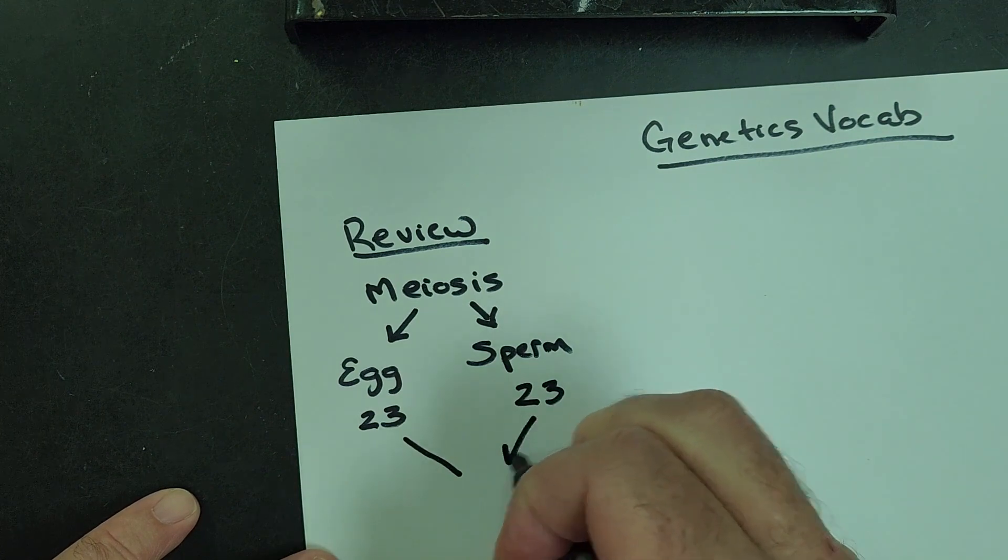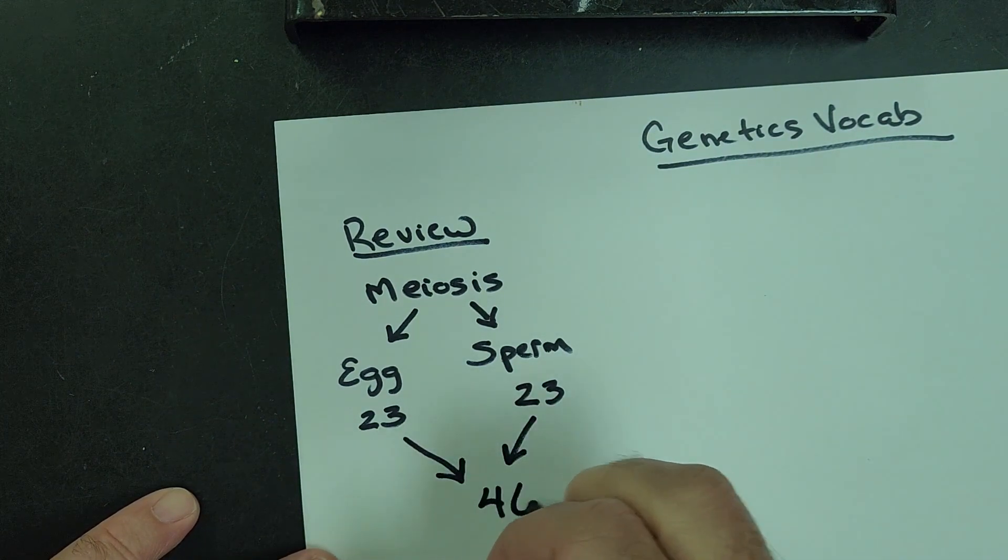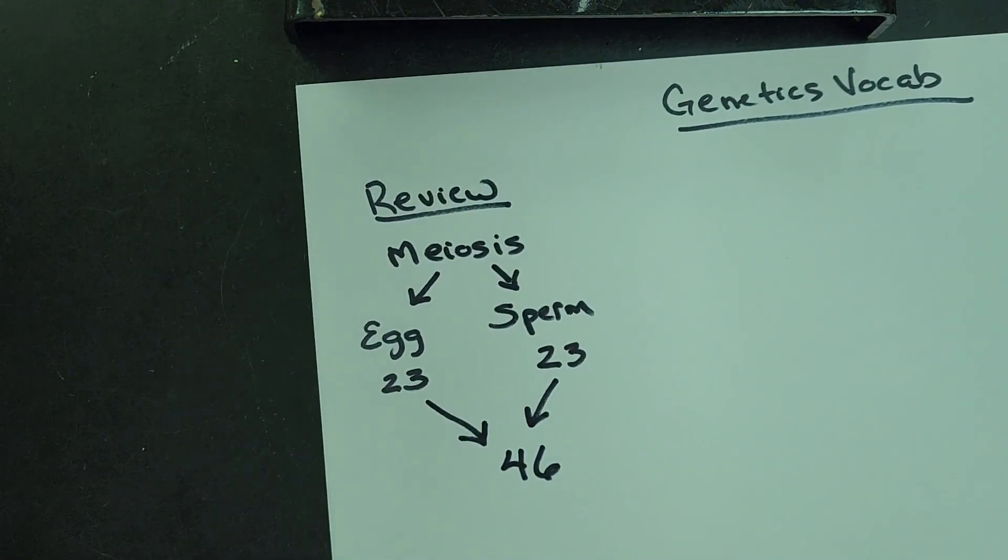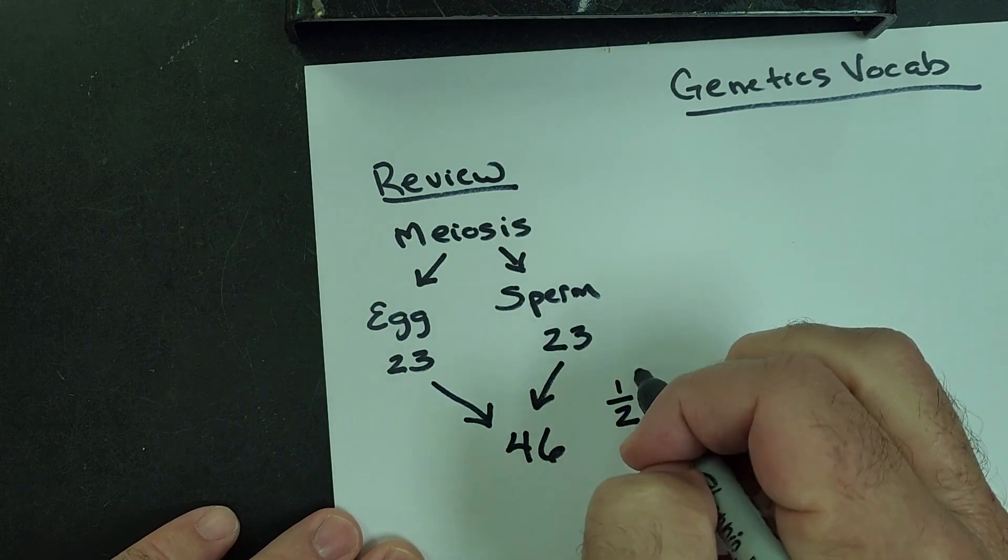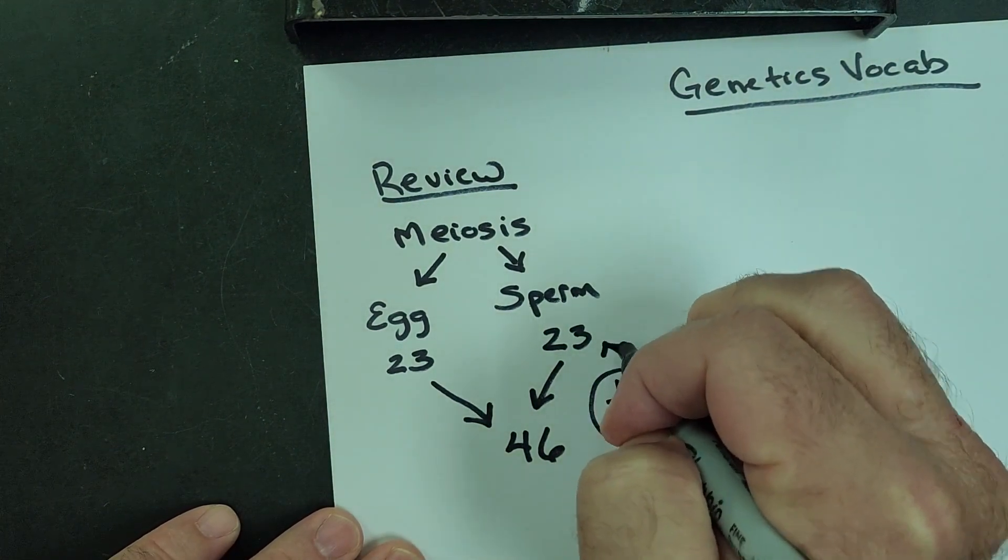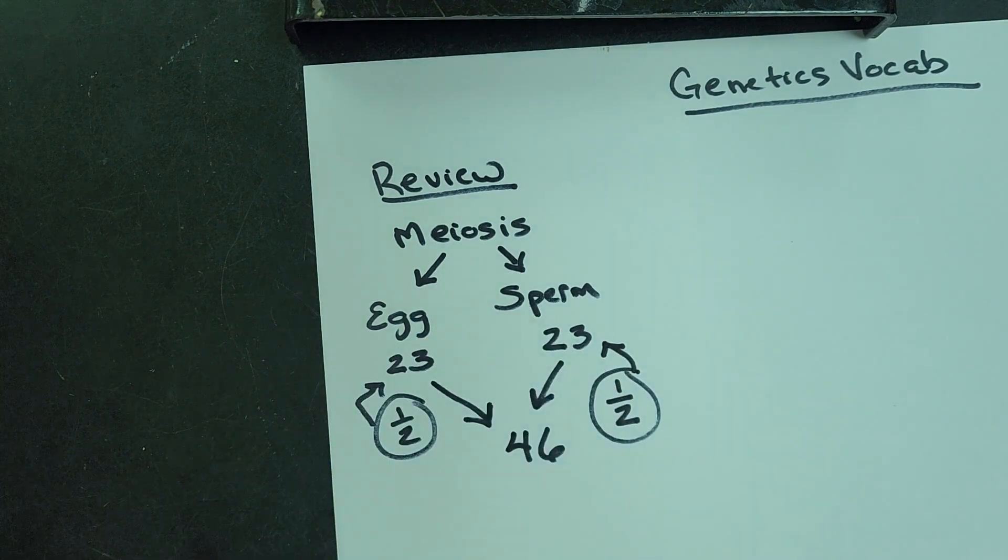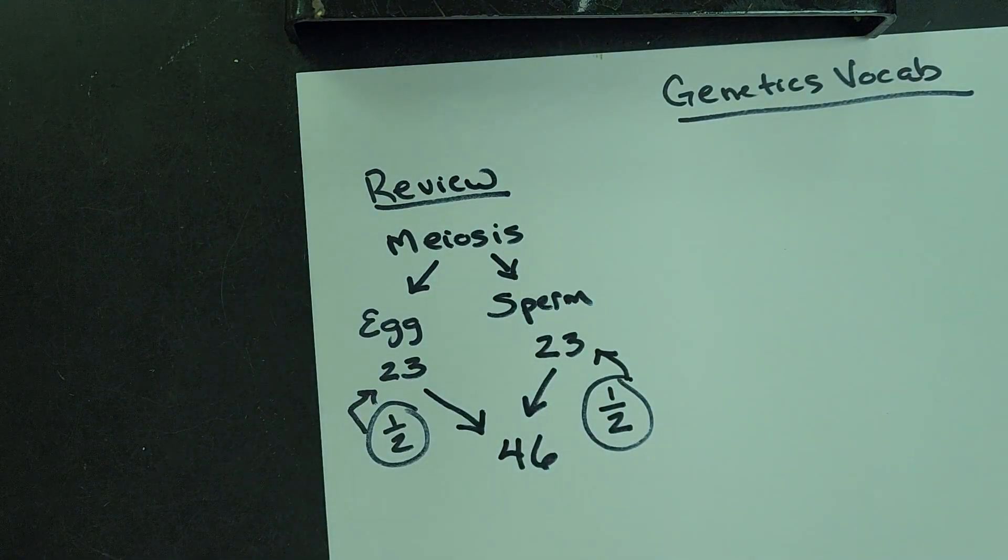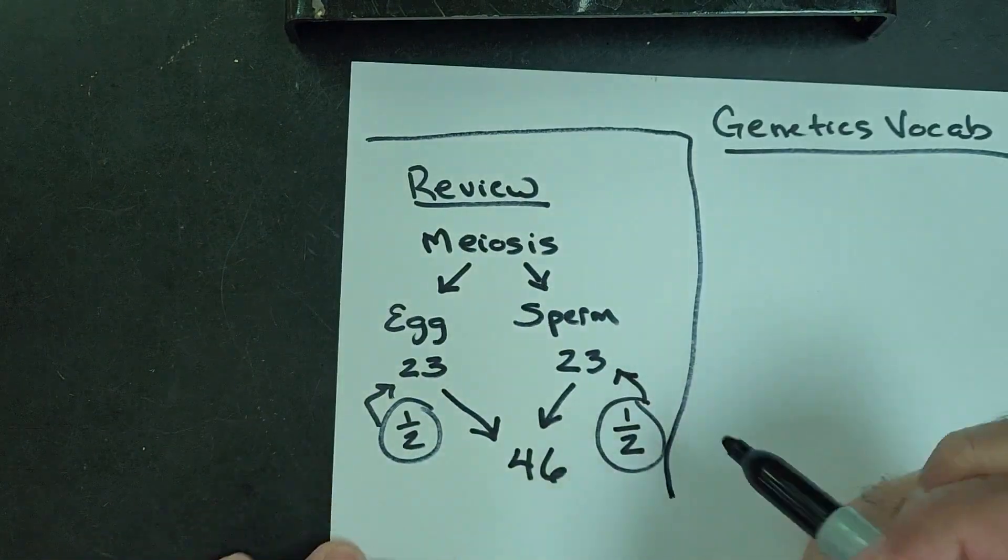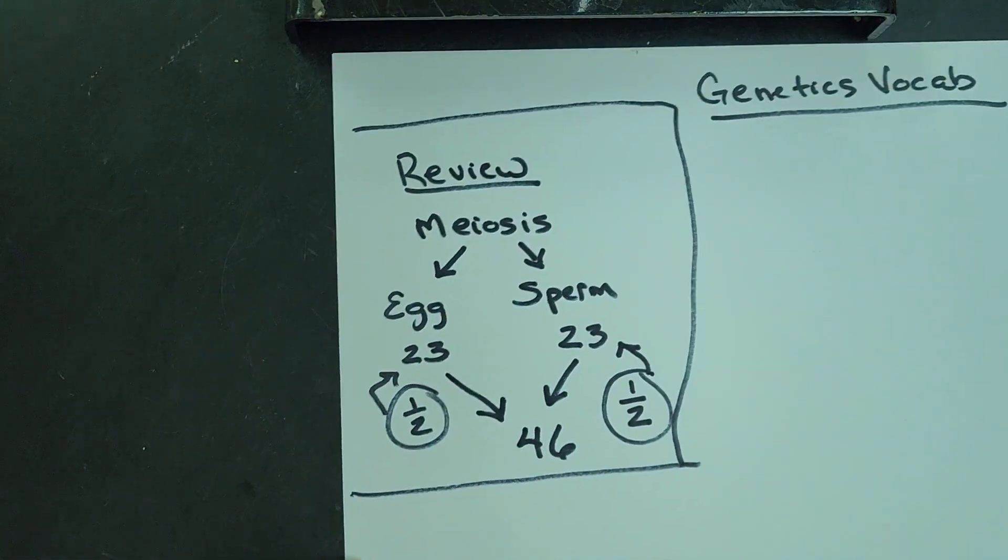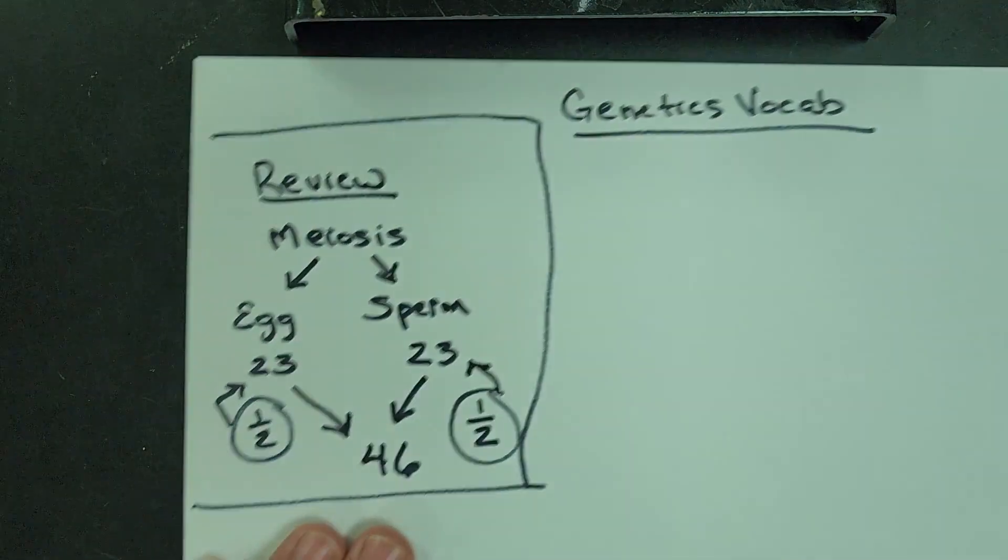And when they combine to make a baby, that baby has 46. And of that 46, half of them come from dad and half of them come from mom. So you get half of your chromosomes from your mom and half from your dad, which is why you have some characteristics that look like mom and some that look like dad.